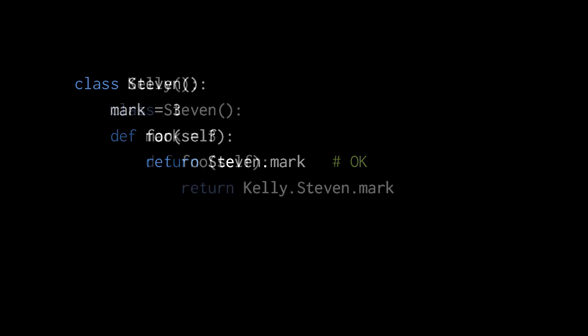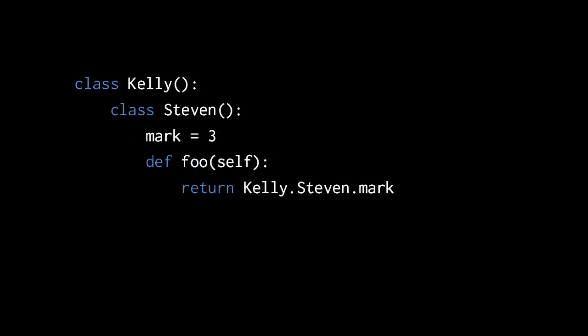When Stephen is created inside Kelly — so Stephen becomes an attribute of the Kelly class — inside that function foo, to refer to mark we now have to write Kelly.stephen.mark. This assumes Kelly itself is not declared directly inside some other class, and is instead part of the module or created in some function. The rule is: inside a scope you cannot see the scope of any enclosing class.